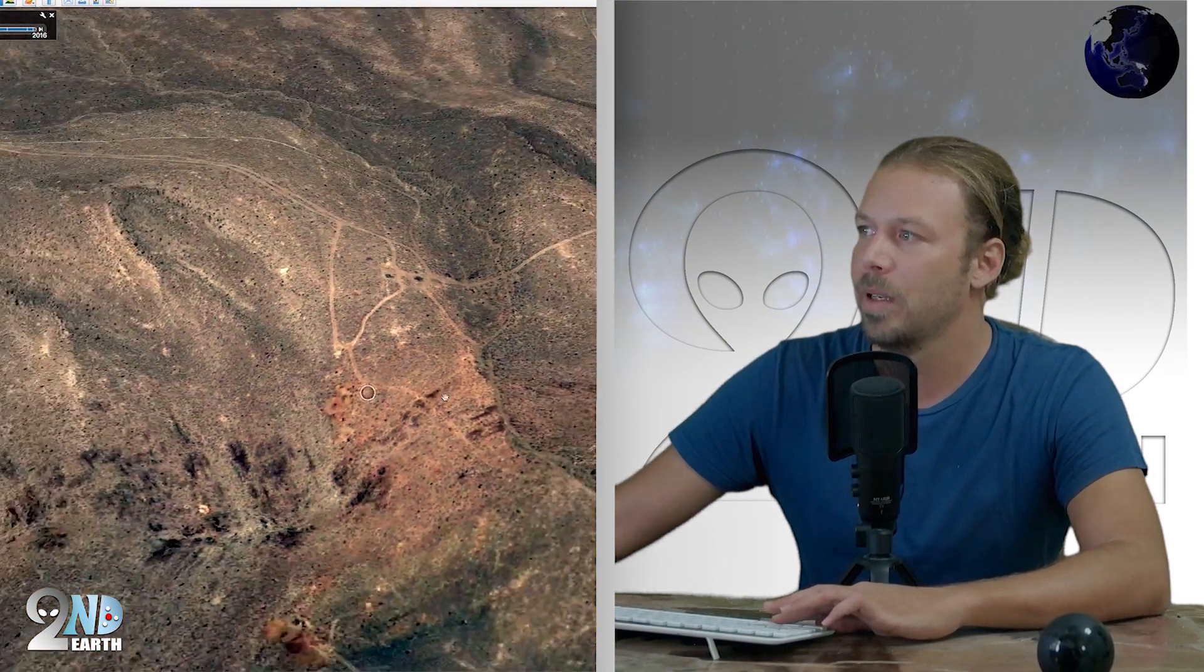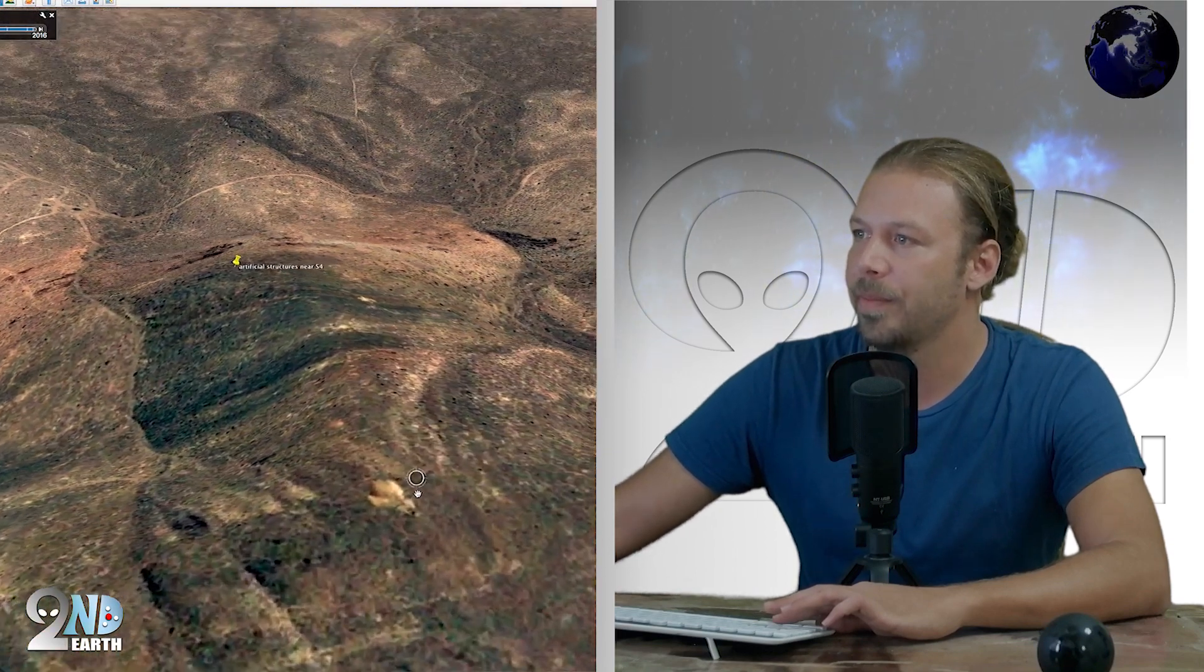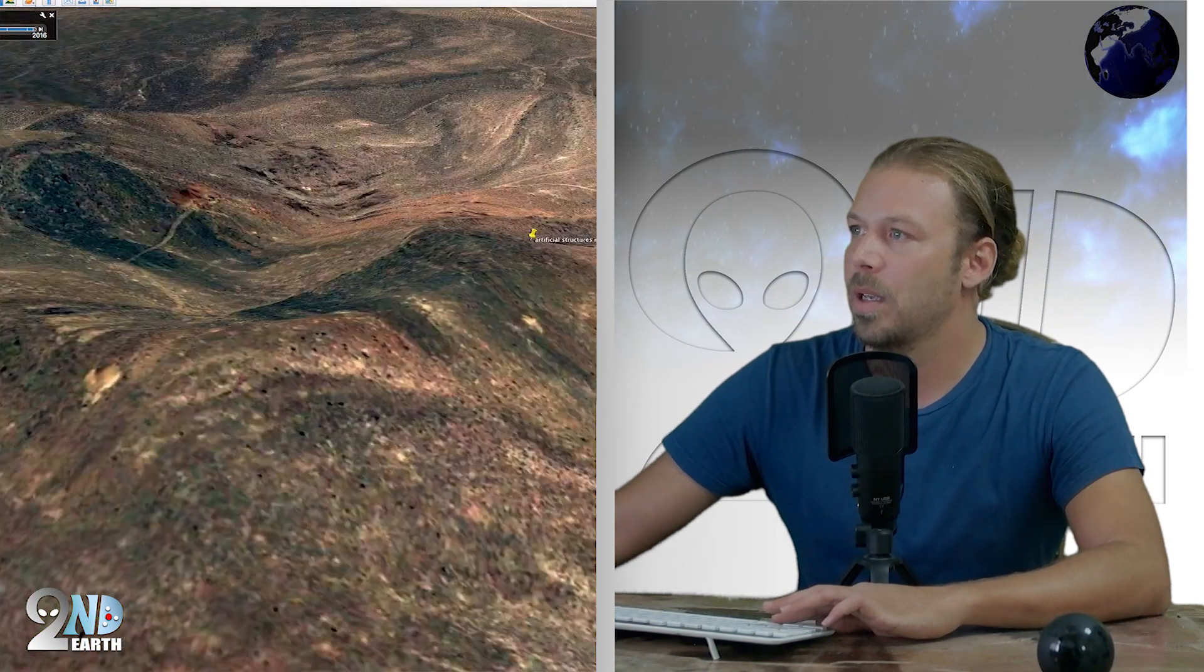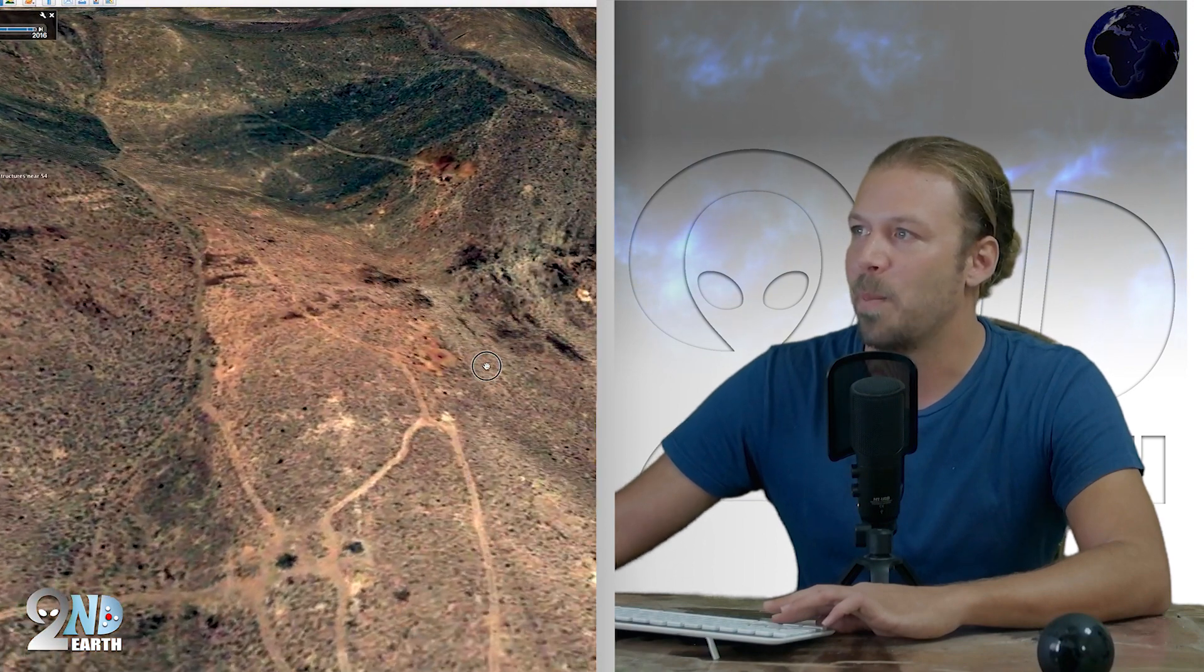So we got this artificial structure, we got this one over here. There seems to be another one a little bit lower in the mountain. We got another one up here on the back side. If we spin around, we see that there's all kinds of intersections and roads that lead all around this mountainous complex.